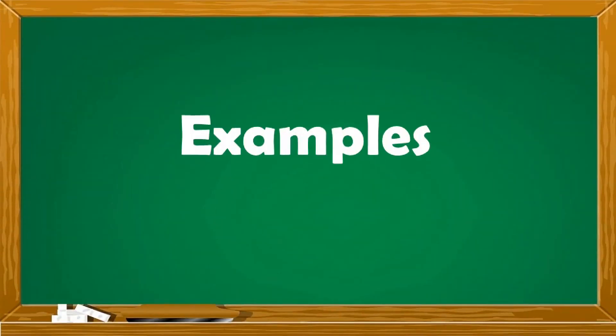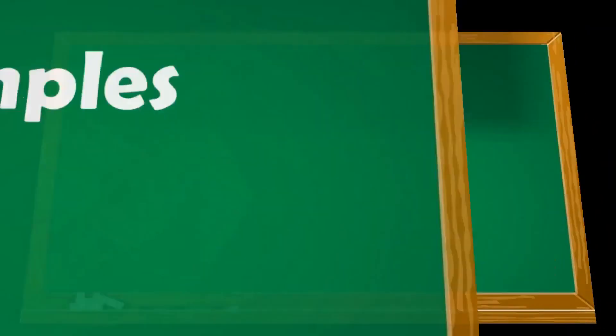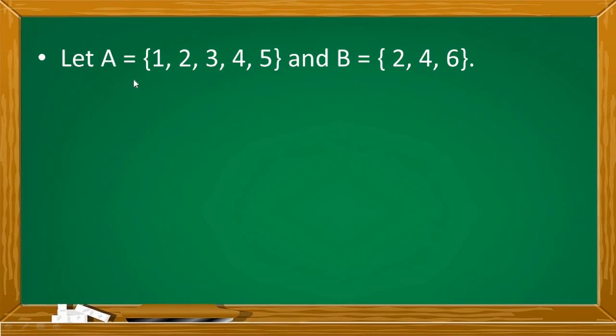Let's have more examples. Let A be a set with elements 1, 2, 3, 4, and 5. And B is equal to a set with elements 2, 4, and 6. Find the intersection and union of the two sets. Number 1, A intersection B. Anong mga elements ang present or magkatulad ni A and B? They both have 2 and 4. So 2 and 4 are the intersections of set A and set B.